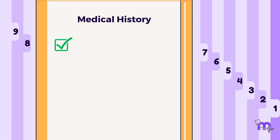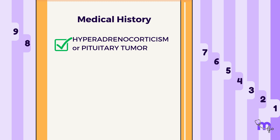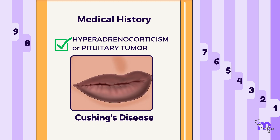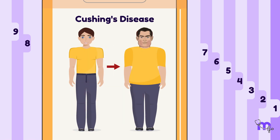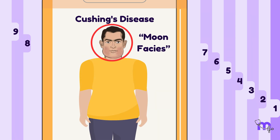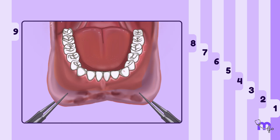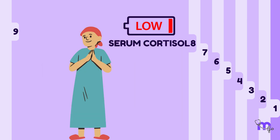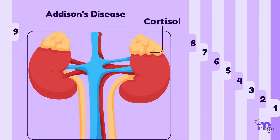A positive medical history of hyperadrenocorticism or pituitary tumor can raise suspicion for Cushing's disease. Patients with Cushing's disease also show weight gain and a characteristic moon facies. If pigmentation is due to low serum cortisol levels, Addison's disease is the diagnosis — a condition resulting from insufficient cortisol production by the adrenal glands.